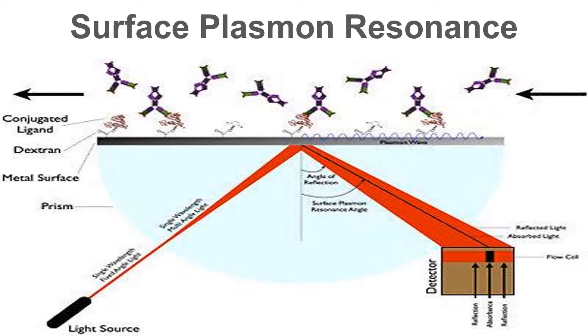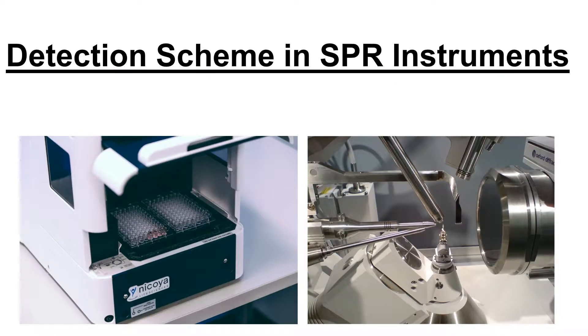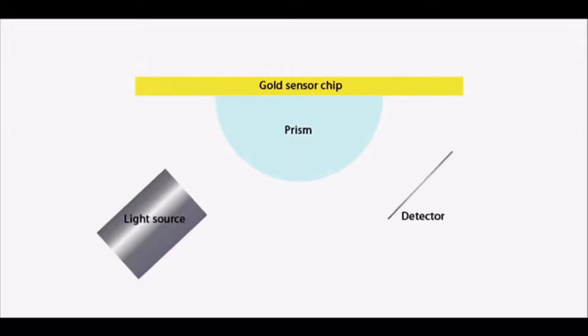To understand SPR Biodetectors, we will first see the detection scheme in SPR instruments. They use a very simple detection scheme. In this setup, a light source passes through a prism, reflects off the backside of the sensor chip surface and goes into a detector.